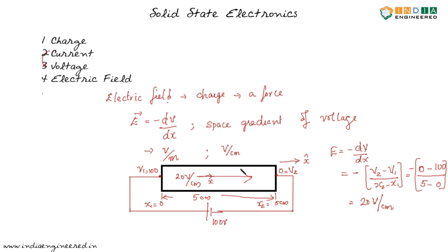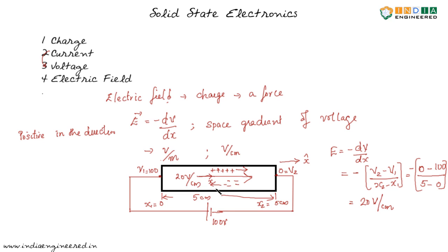Now, what happens if we have some positive charges in this material? If we have some positive free charge carriers which are ready to move, these positive charges will be repelled from the positive terminal, and they will move in the direction of the electric field. Now suppose we have some negative charges that are free to move — these negative charges will be attracted to the positive terminal, or repelled by the negative terminal. So the negative charges tend to move in the direction opposite to the electric field.